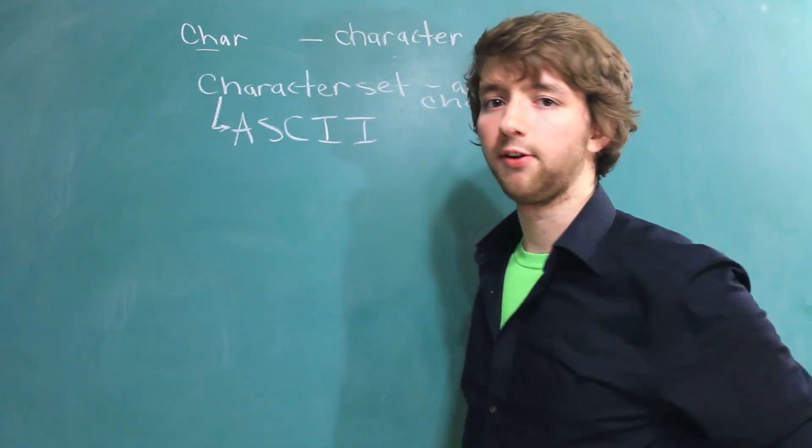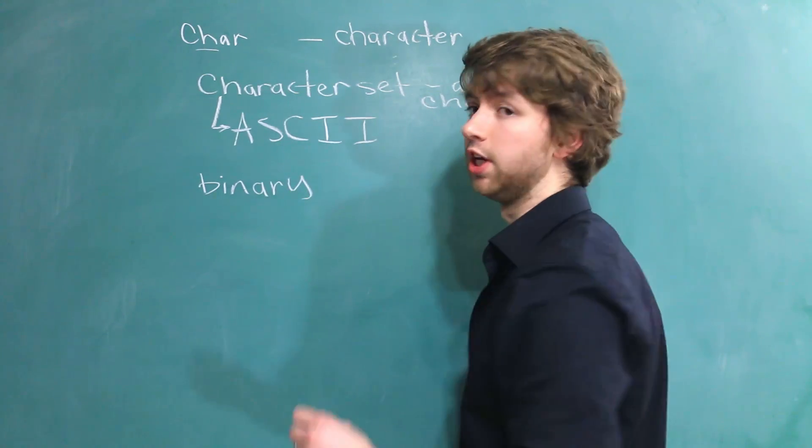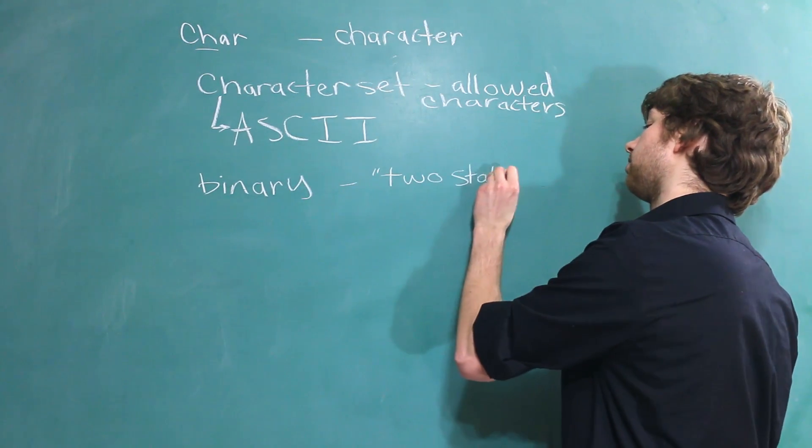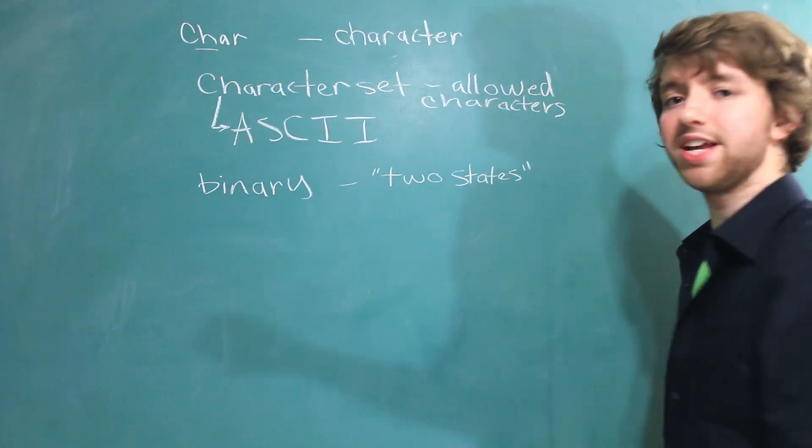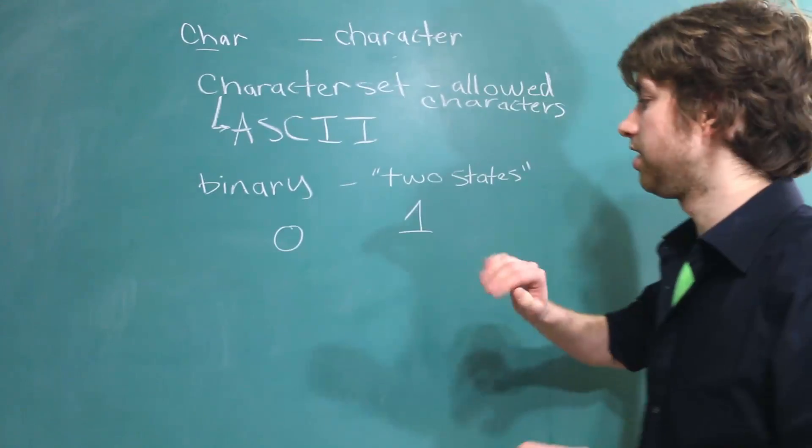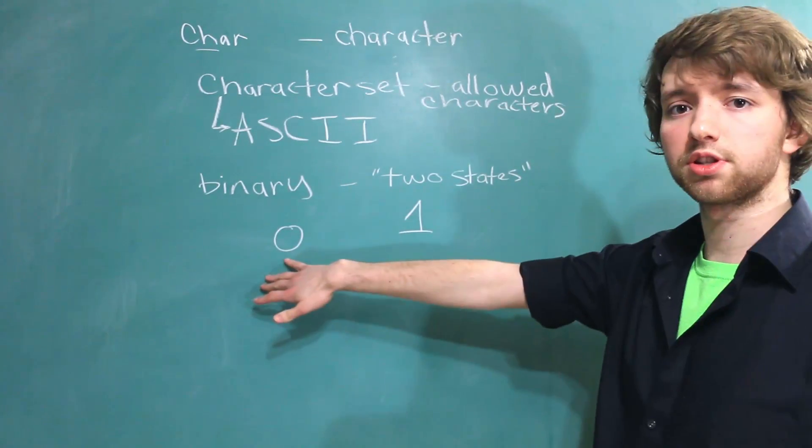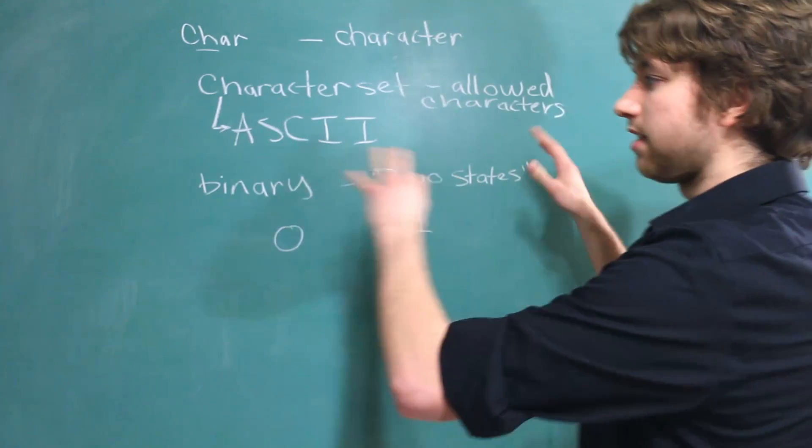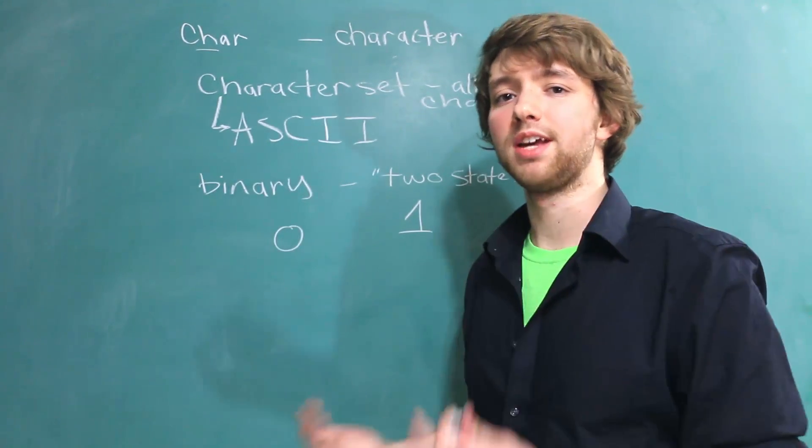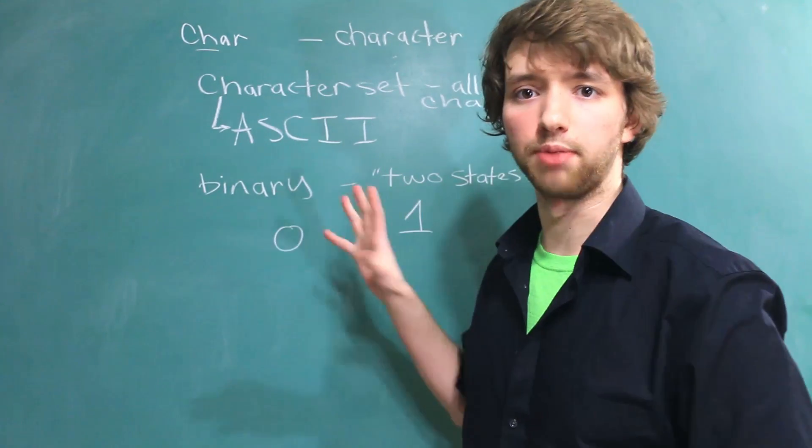Now, before we talk more about character sets, I want to discuss binary. Now, whenever you hear the term binary, you should automatically think two states. We can represent two different states using zeros and ones. This could be on, off, high, low, yes, no, true, false, etc. The term binary, you often associate it with computers, but it doesn't necessarily have to be computers. Anything that is in two states can be considered binary.